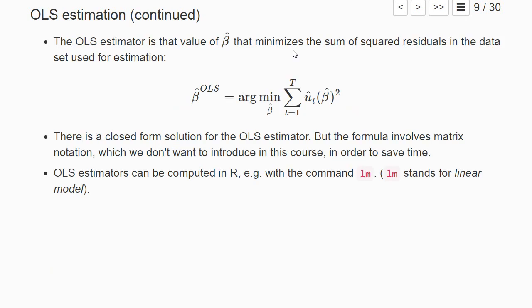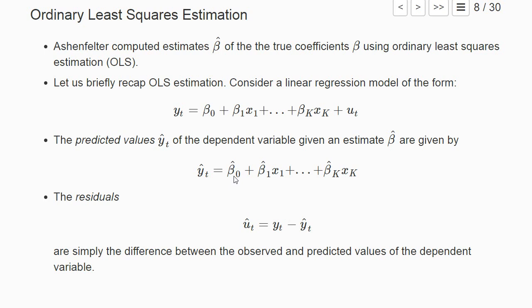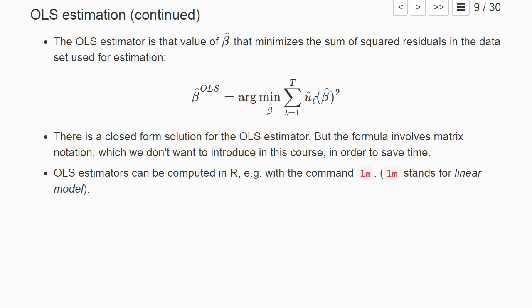The OLS estimator is that value of all possible beta hat—a vector of numbers—that minimizes the sum of the squared residuals in the data set used for estimation. These residuals are a function of the beta hats because y hat depends on them. If we have a different beta hat, we have a different residual.